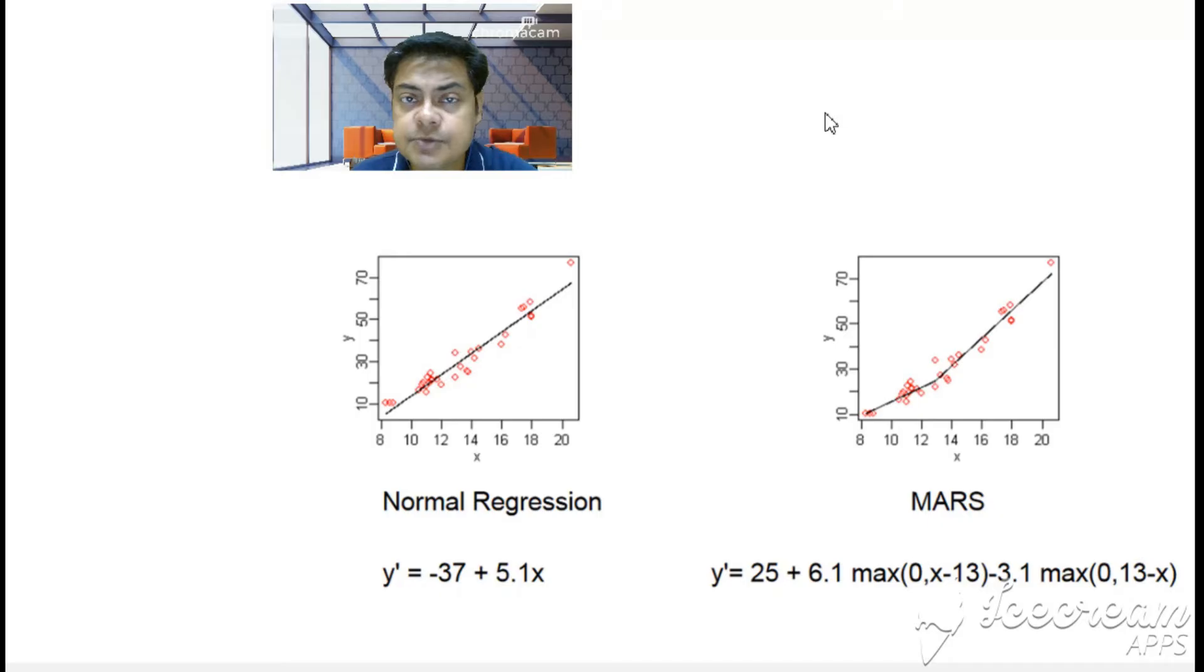But in case of MARS you can see a max function, and that max function is denoted by a range between 0 to x minus a, and the other part is 0 to a minus x. Here the value of a is 13, so basically 0 to x minus a and 0 to a minus x. That's the concept that gets connected, and that's how the MARS function works.